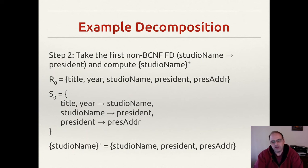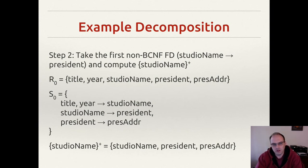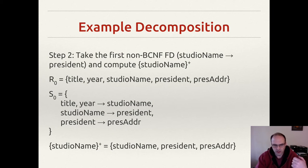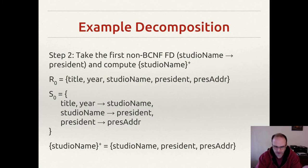Step two is to take the first non-Boyce-Codd normal form functional dependency — in our case, president being dependent on studio name — and compute the closure of X, which is the left side: studio name. So we compute the closure of studio name. Studio name doesn't apply to the first functional dependency. The second one gives us president, so we put president in. Now our result set has studio name and president. The third functional dependency can now apply, so president address also joins the result set. The closure of studio name is: {studio name, president, president address}.